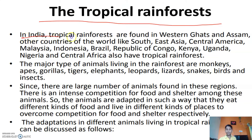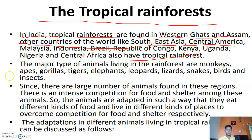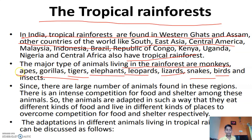These tropical regions are rich in vegetation and have large diversity of animals. In India, tropical rainforests are found in the Western Ghats and Assam. Other countries of the world like Southeast Asia, East Asia, Central America, Malaysia, Indonesia, Brazil, Republic of Congo, Kenya, Uganda, Nigeria and Central Africa also have tropical rainforests. The major animals living in the rainforest are monkeys, apes, gorillas, tigers, elephants, leopards, lizards, snakes, birds and insects.